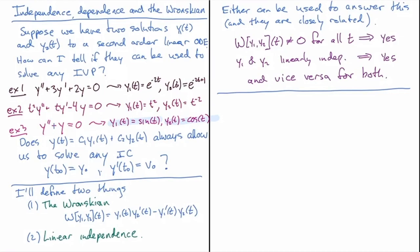I'm going to define two useful tools to understand how to answer this question. The first one is the Wronskian, and the second is the concept of linear independence. Linear independence should be very familiar from linear algebra with vectors, but now we're dealing with functions instead. So how do we use the Wronskian or linear independence to answer this question?